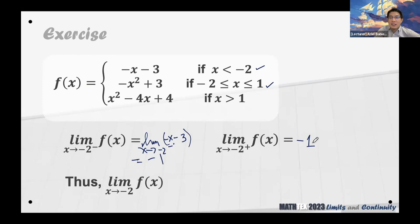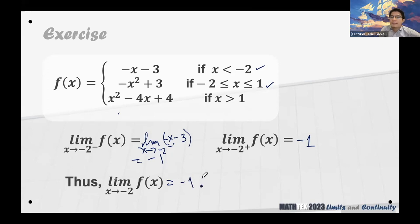It's not that hard. If the functions are explicitly defined, you just look for the proper condition. The limit from the left of negative 2 is negative 1, and the limit from the right of negative 2 is also negative 1. The two are equal, so the limit of the function as x approaches negative 2 is, in fact, equal to negative 1. Limit from the left means values less than negative 2; limit from the right means values greater than negative 2.